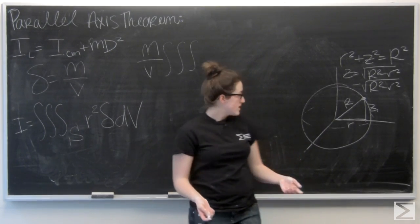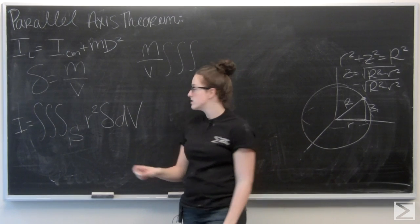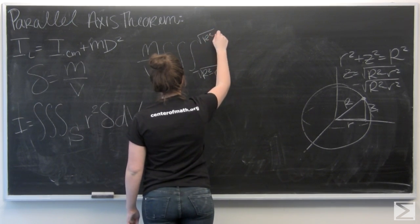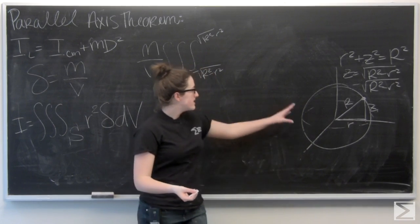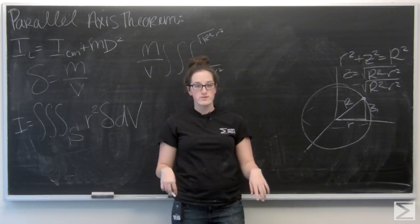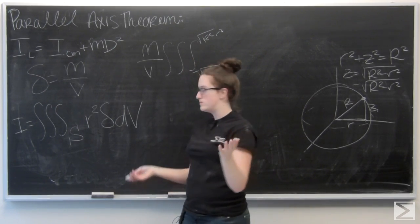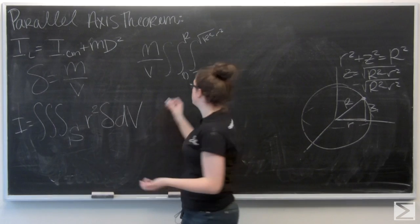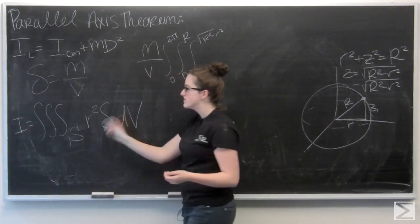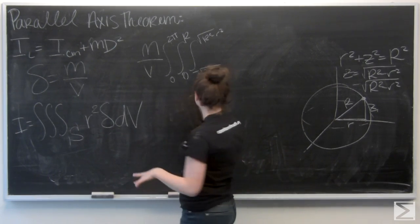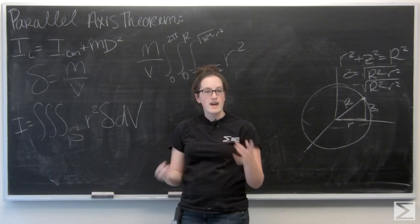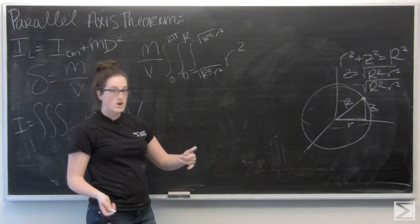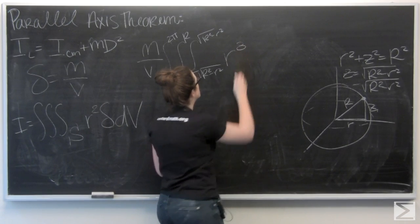I want to integrate with respect to Z first because these boundaries are a function of r. Then r goes from 0 to big R, and theta goes from 0 to 2π since the sphere goes all the way around. Now for dV, I have to think about the volume element in cylindrical coordinates, which is r dr dz dθ. So I'm going to change that r squared to r cubed and add everything else in.